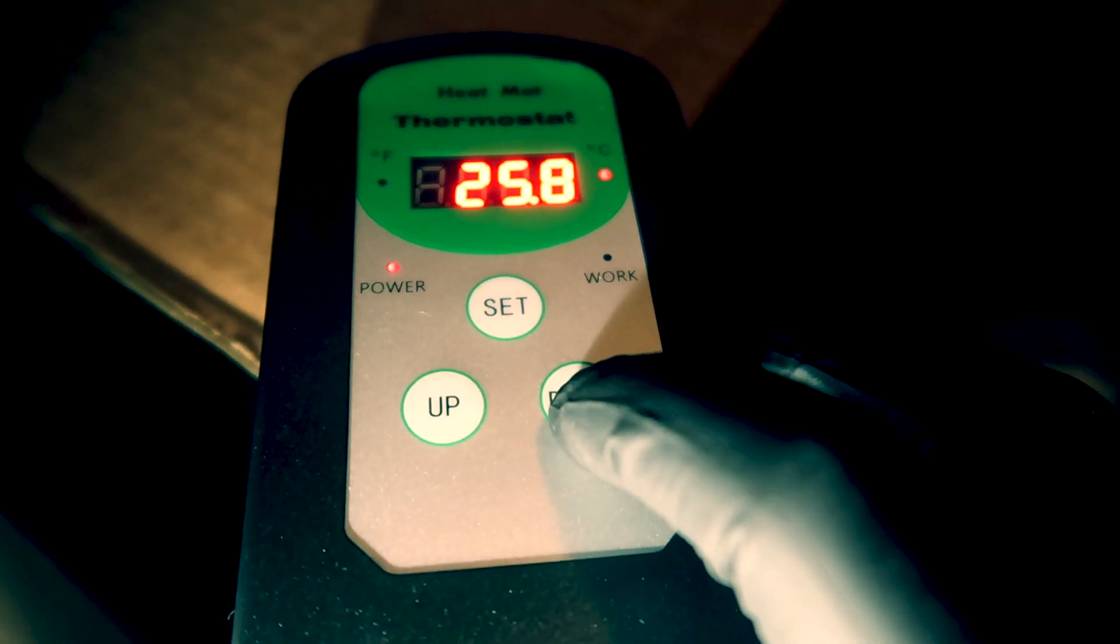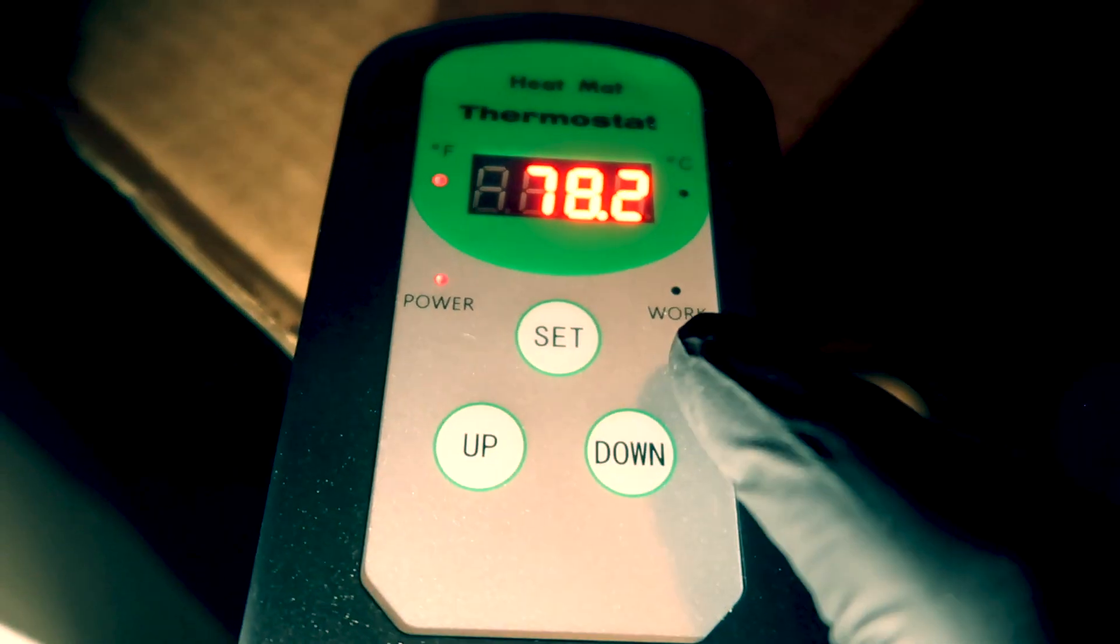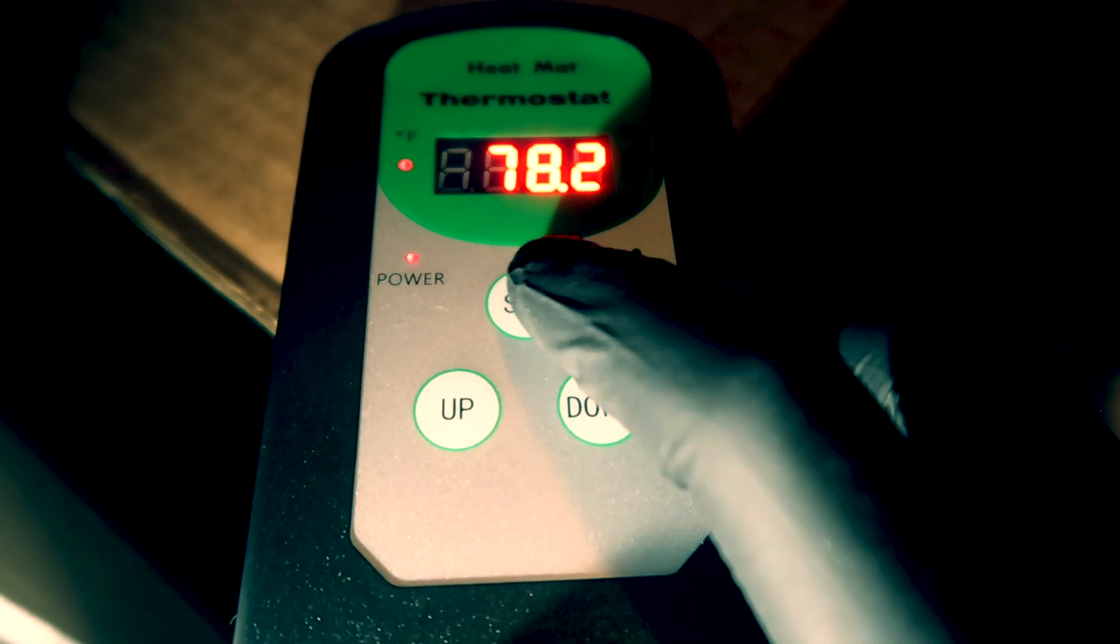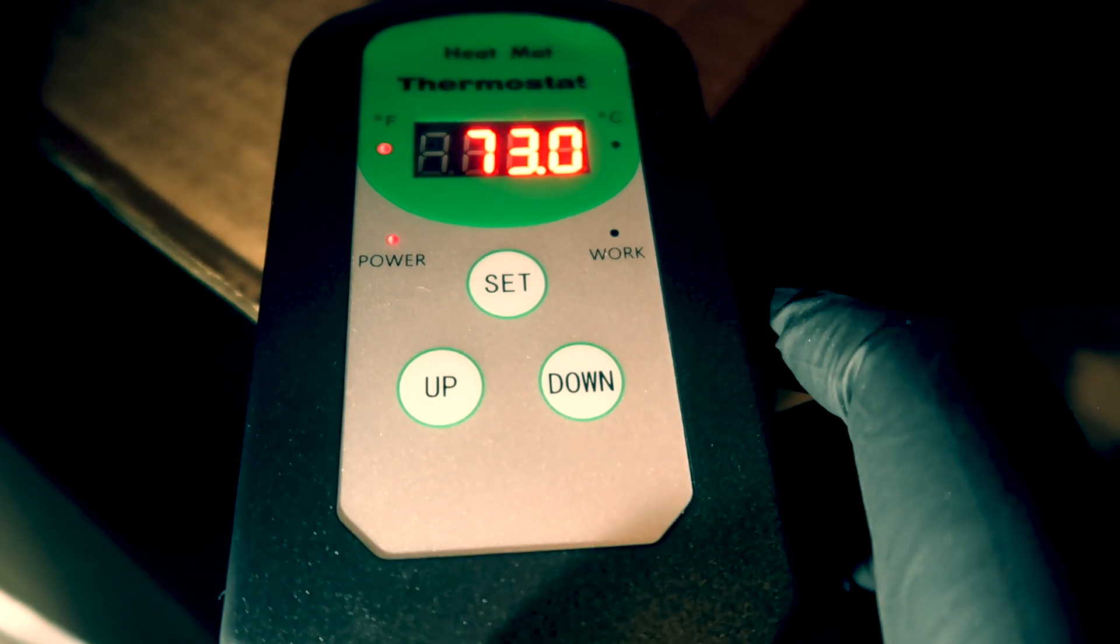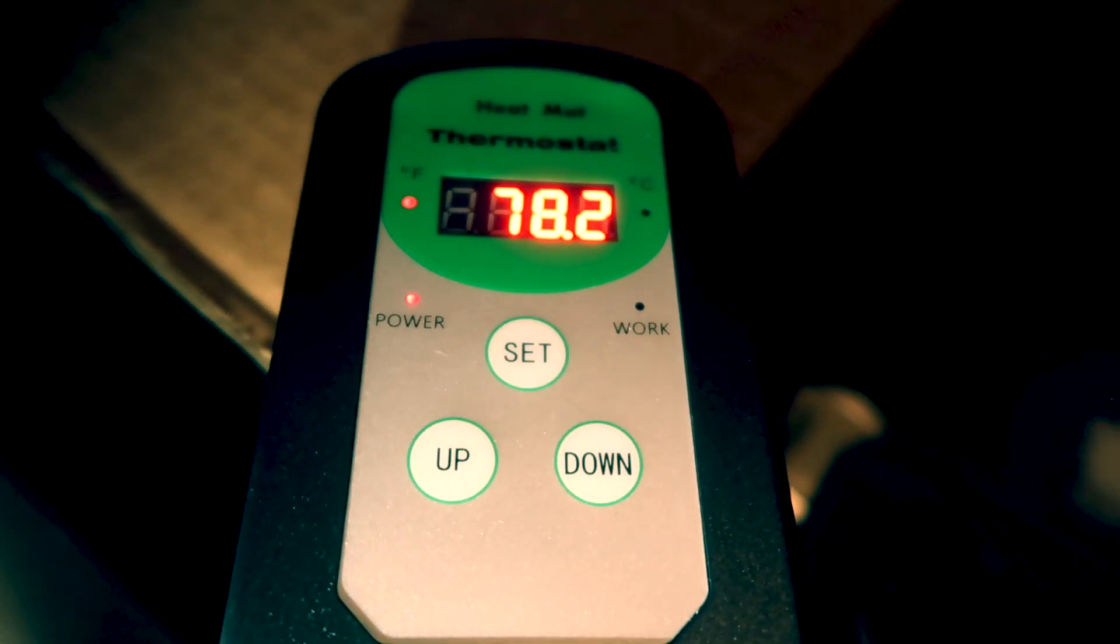So in order to view Celsius I just need to press down, go back to Fahrenheit press up, and to see the current temperature that the thermostat is set to shut off at I just press set once. And it's currently set to shut off at 73 degrees Fahrenheit. So I want to change that to 80 degrees, I want that to be the maximum temperature because it's going to get pretty cold.